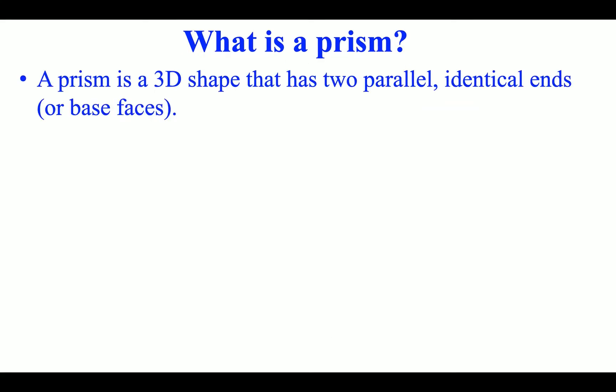What is a prism? A prism is a 3D shape that has two parallel identical ends, or base faces.